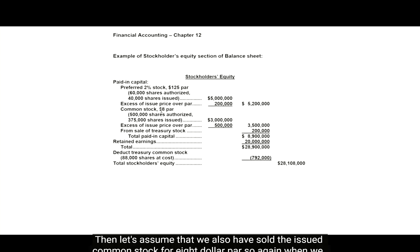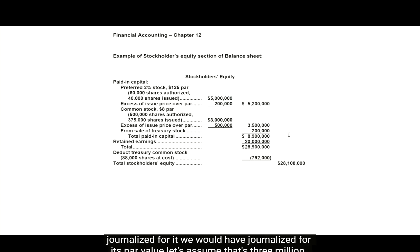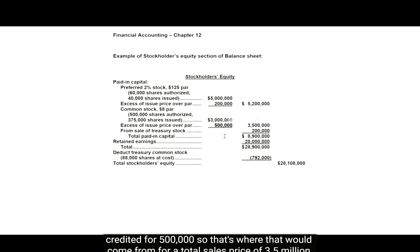Then let's assume that we also have sold or issued common stock for $8 par. So again, when we journalized for it, we would have journalized for its par value — let's assume that's $3 million. And let's assume that we sold it over par for $500,000, so our paid-in excess would have been credited for $500,000. For a total sales price of $3.5 million.